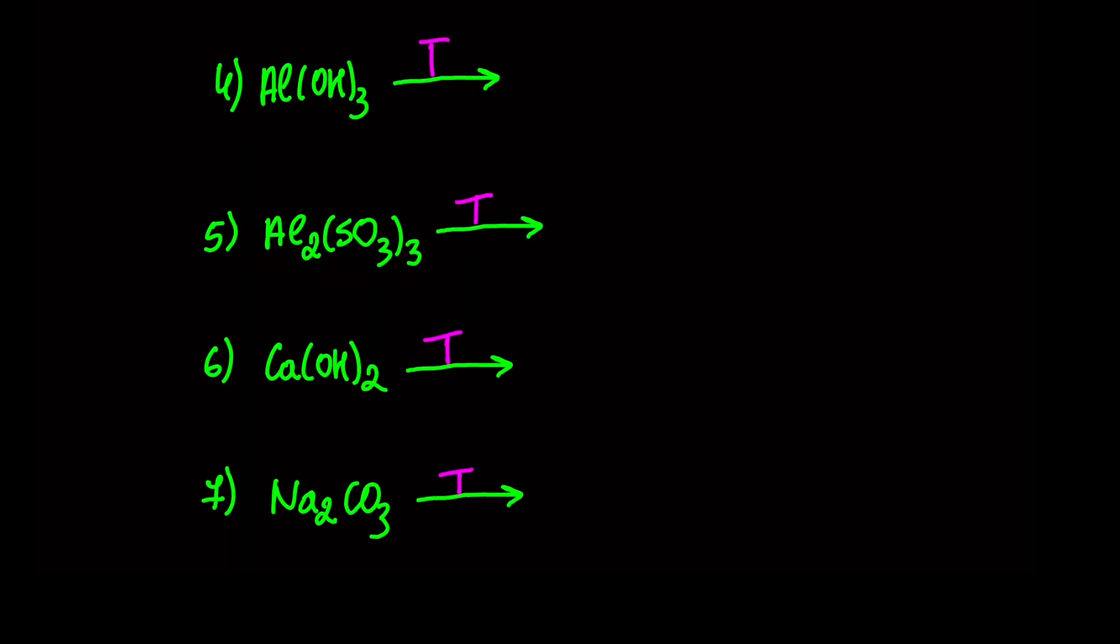Let's write the products for aluminum hydroxide decomposition. When we decompose hydroxide, basic oxide and water are always produced. What is the formula for basic oxide?